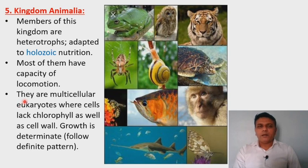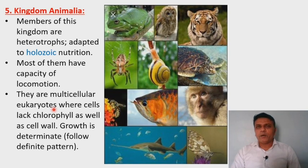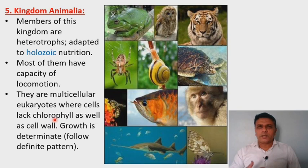Animals are multicellular eukaryotes, meaning they show presence of eukaryotic cell structure. Eukaryotic cells show presence of a well-developed nucleus, and membrane-bound cell organelles like Golgi complex, mitochondria, and endoplasmic reticulum are present. Cells show absence of chlorophyll, which is essential for photosynthesis — the process by which plants produce their own food. Since chlorophyll is absent in animals, they are dependent on other organisms for their food.